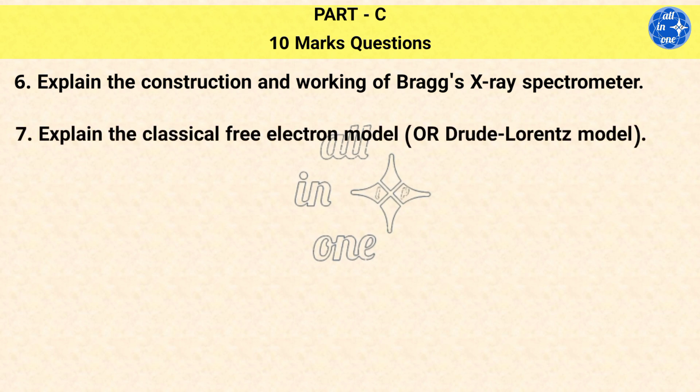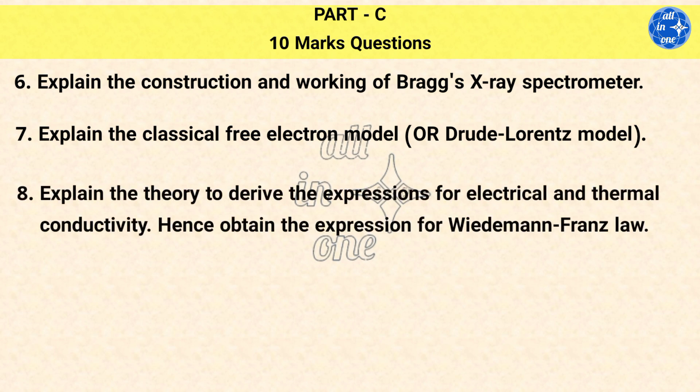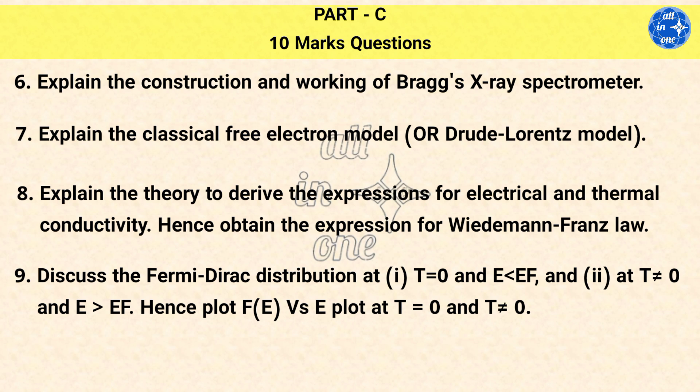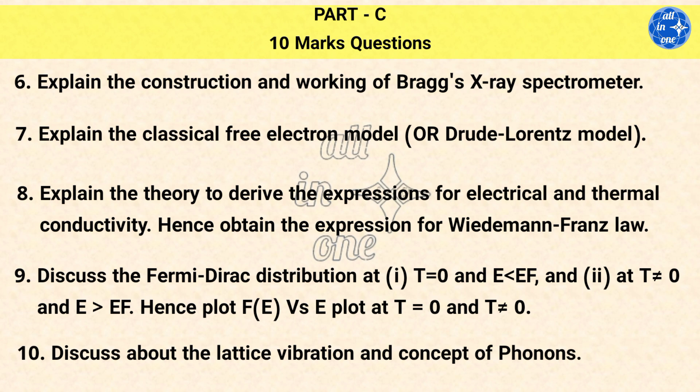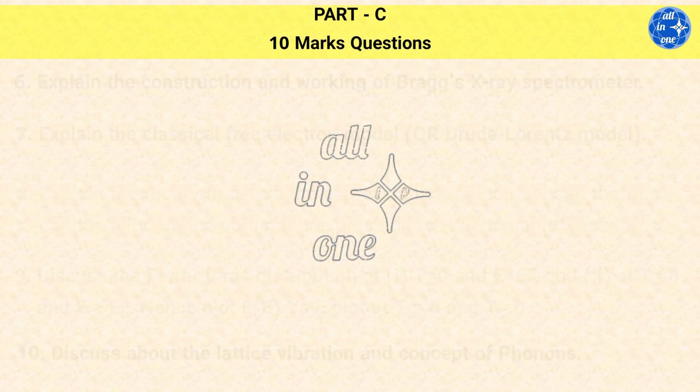Question 7: Explain the classical free electron model or Drude-Lorentz model. Question 8: Explain the theory to derive the expressions for electrical and thermal conductivity. Hence obtain the expression for Wiedemann-Franz law. Question 9: Discuss the Fermi-Dirac distribution at T equals 0 and E less than EF, and at T does not equal 0 and E greater than EF. Hence plot F(E) vs E at T equals 0 and T does not equal 0.